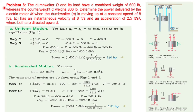This is a numerical problem based on Newton's law of motion. The dumb waiter D and its load have a combined weight of 600 lb. The counterweight C has a weight of 800 lb. We need to determine the power delivered by the electric motor M.